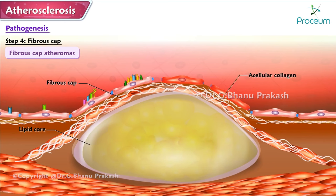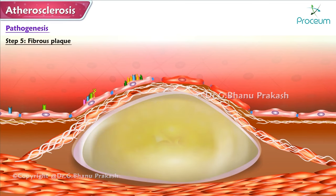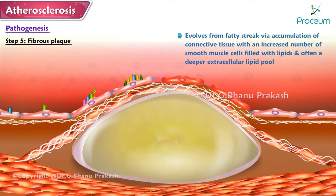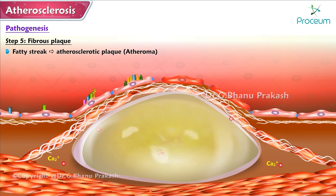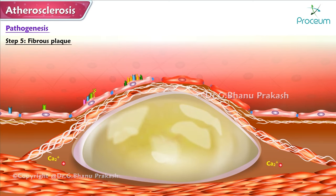Step 5 — Fibrous Plaque: the fibrous plaque evolves from the fatty streak via accumulation of connective tissue, an increased number of smooth muscle cells filled with lipids, and often a deeper extracellular lipid pool. Eventually, the lipids react with calcium, causing calcification and transformation of the fatty streak into an atherosclerotic plaque called an atheroma. These are advanced lesions and often contain a necrotic lipid-rich core and calcified regions.